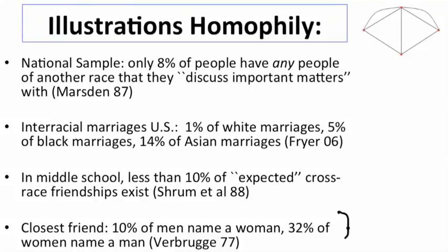When you look at closest friends, 10% of men name a woman, and 32% of women name a man. So there are some asymmetries there, but again, well below the roughly 50% you should see if there were no bias.